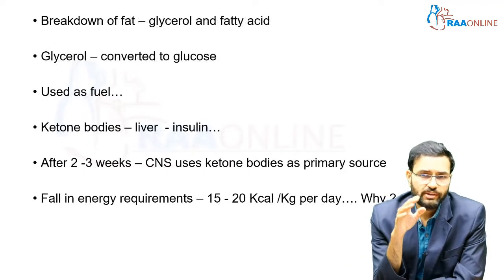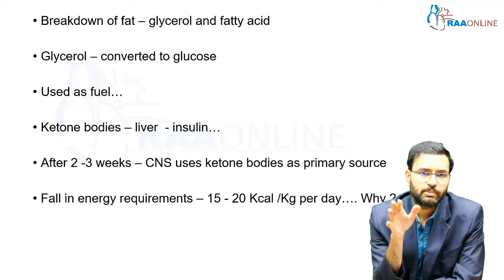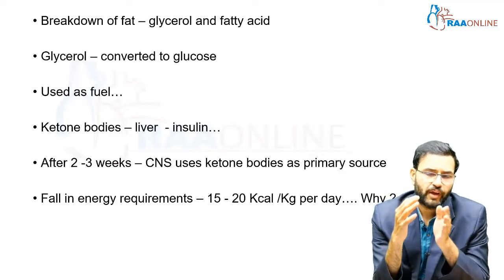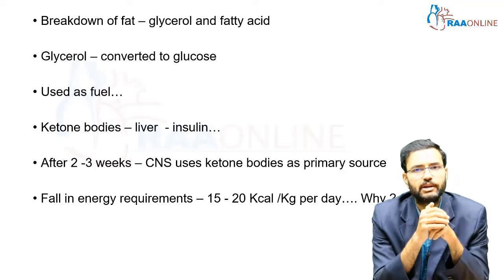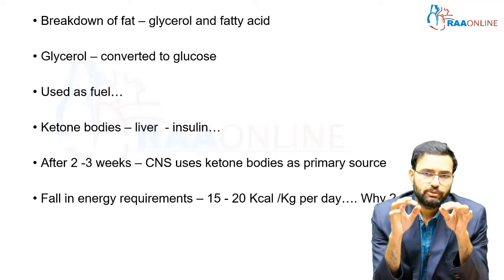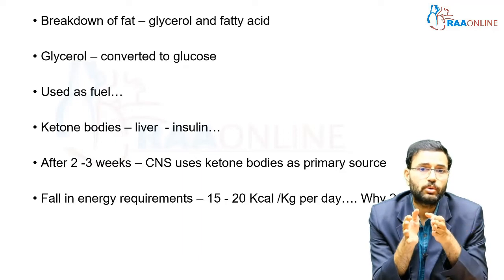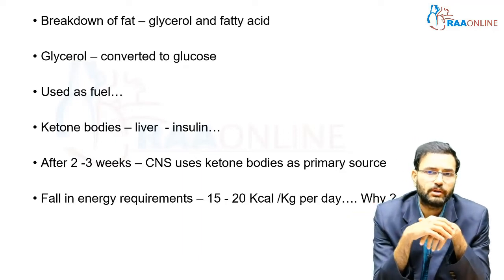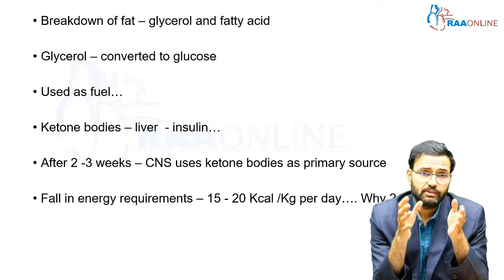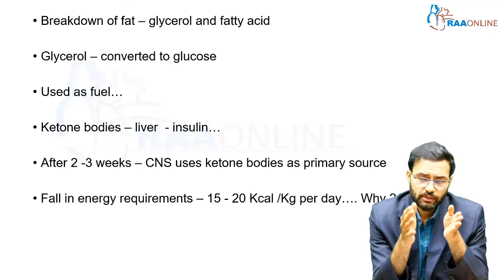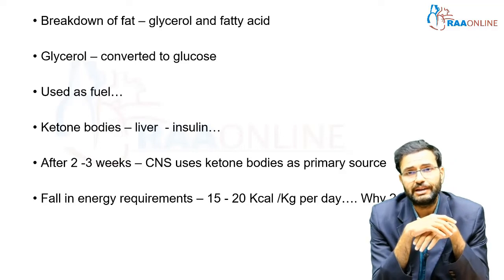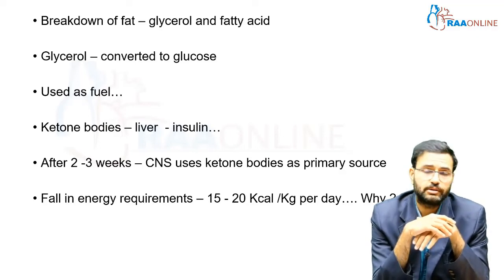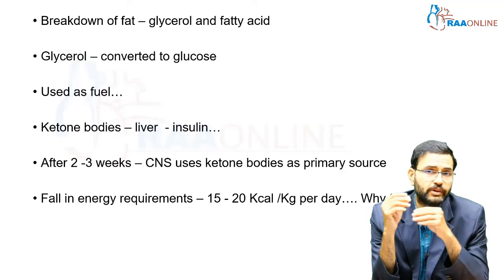Once amino acids start being used, fat within the body starts breaking down into glycerol and fatty acids. Glycerol gets converted into glucose and takes part in gluconeogenesis. The fatty acids subsequently enter ketogenesis, forming ketone bodies in the liver. This process is dependent on insulin deficiency.